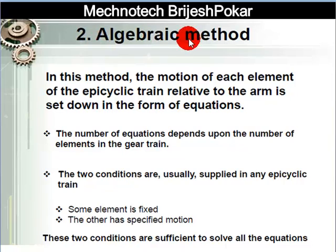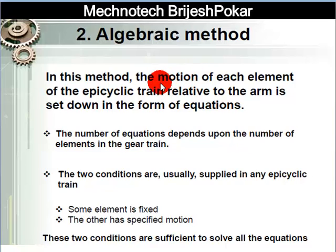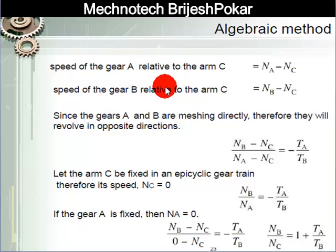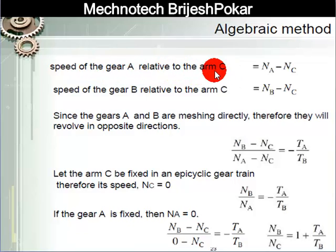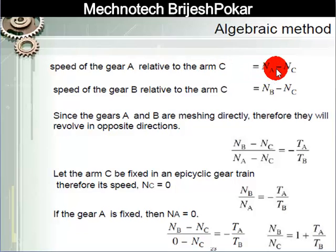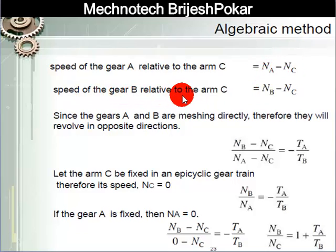The second method is the algebraic method. By using algebra we can also find out the gear ratio in an epicyclic gear train. Suppose the speed of gear A relative to arm C is Na − Nc, and the speed of gear B relative to arm C is Nb − Nc.